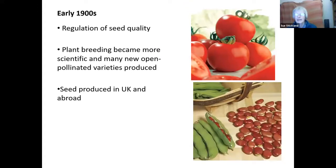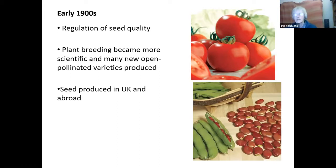In the early 1900s came the first regulation of seed quality. After the First World War, the quest for more efficient agriculture addressed seed quality — laying out minimum germination standards that are still important today. At the same time, scientific plant breeding emerged: the laws of genetics had become recognized, and new varieties were made by deliberate crosses between likely parents, with best progeny selected over several generations until achieving a stable open-pollinated variety.